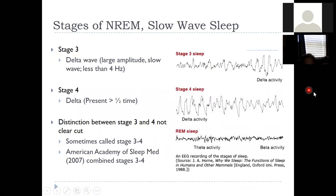When looking at stages three and four, there's a really hard time distinguishing between the two — even for trained technicians looking at the waves. Over time, because individuals have difficulty distinguishing them, we now often refer to them as stages 3/4 combined. The American Academy of Sleep Medicine in 2007 decided to combine them, though some papers still split the two. The difficulty is that the transition from stage three to stage four is very gradual — delta activity starts at stage three, and moving from three to four is almost imperceptible.